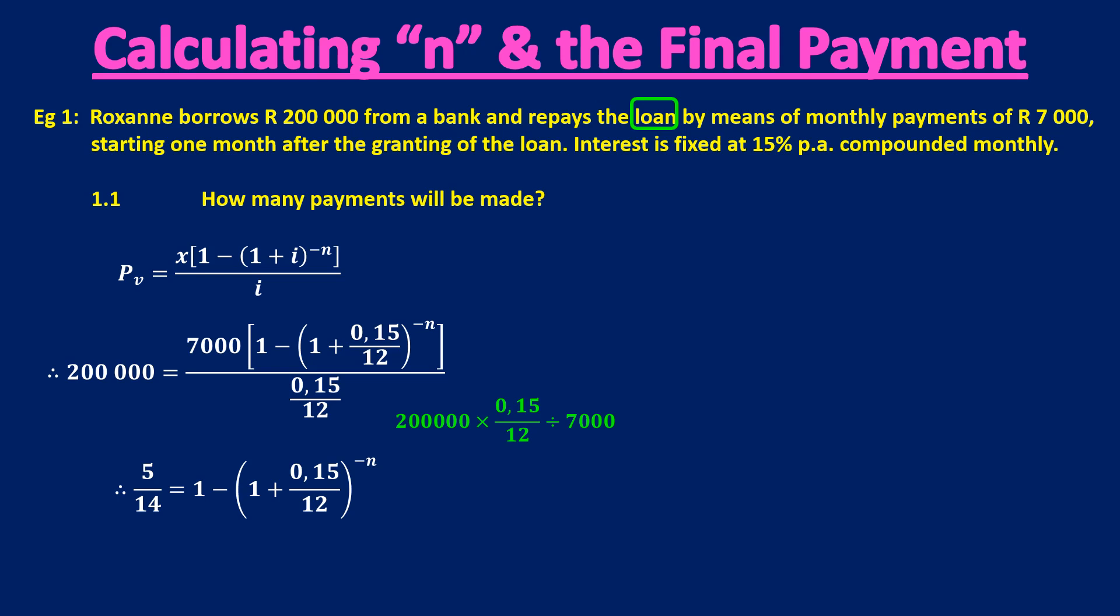Now, if we look at that line, it says 1 minus the bracket. So if I take the bracket over to the left-hand side, that bracket will become positive. And if I take 5 over 14 over to the right-hand side, 1 minus 5 over 14 gives me 9 over 14.